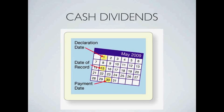The declaration date is the date that a company announces they're going to pay a dividend. Once the company announces this, it creates an obligation to the corporation — a liability. Therefore they would have to record the liability: dividends payable.